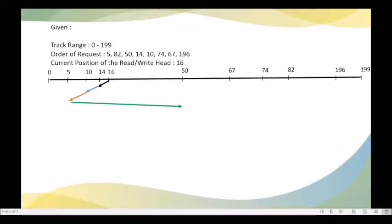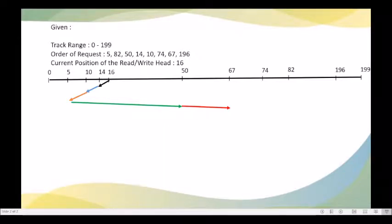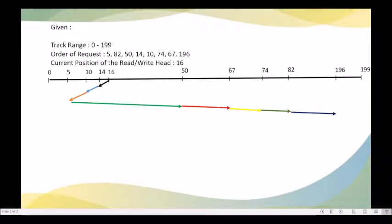From track number 50, it will move towards track number 67. From track number 67, it will move towards track number 74. From track number 74, it will move towards track number 82. And finally, from track number 82, it will move towards track number 196.